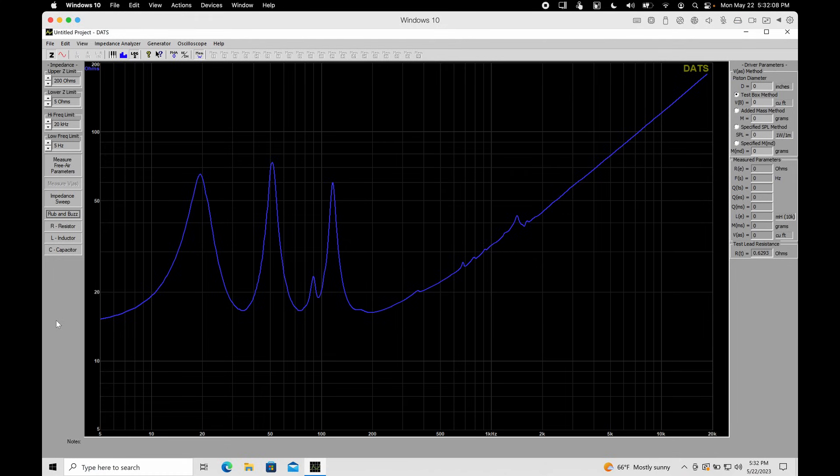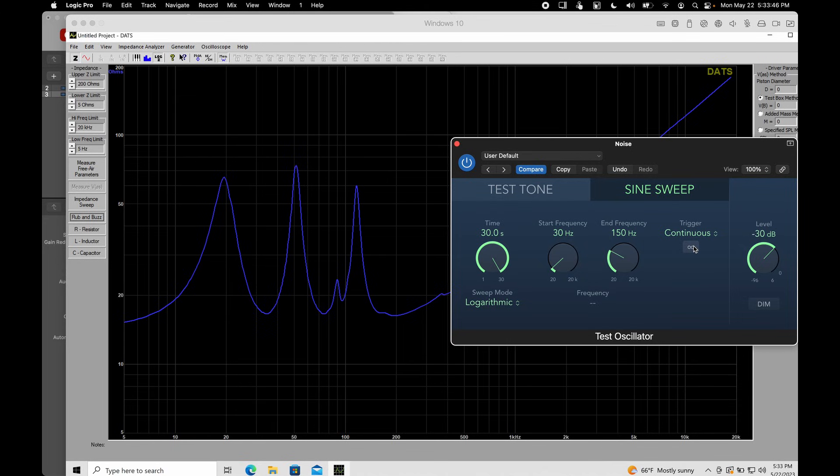Remember how amplifiers maintain their voltage given a certain gain setting, and it's the current that is allowed to change? Let's do a slow frequency sweep from 30 hertz up to 150 hertz, and watch this happen in accordance with the impedance chart in real time.